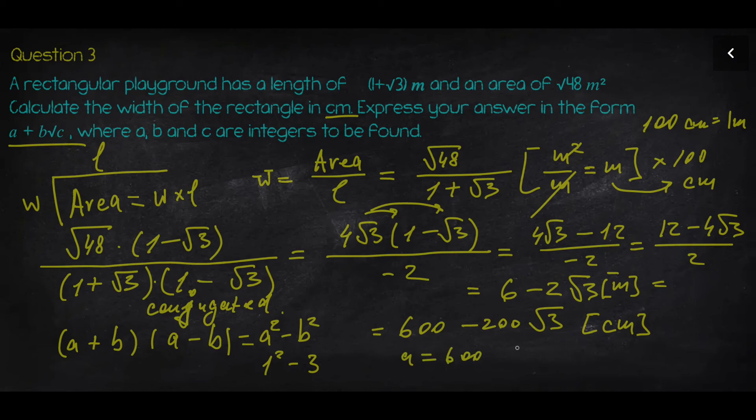a is going to be 600, b is negative 200, and c is 3. As you understand, no matter whether you multiply by 100 or not, c stays the same because 100 is just the factor before the square root and doesn't have any effect on c. Hope you got it, and let's move to the next question.